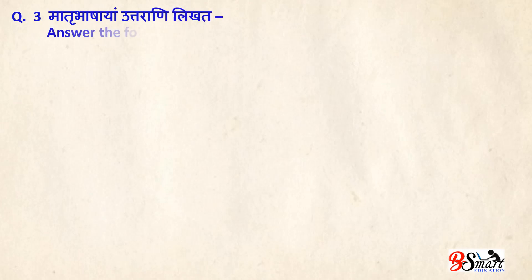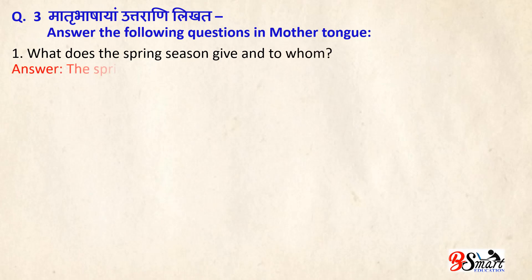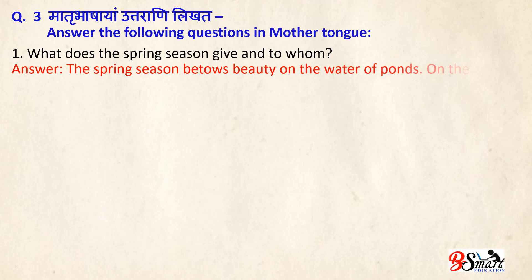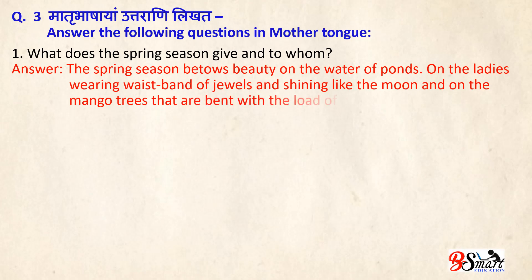Question No. 3: Answer the following questions in English. First: What does the spring season give and to whom? Answer: The spring season bestows beauty on the water of the ponds, on the ladies wearing wristbands of jewels and shining like the moon, and on the mango trees that are bent with the load of blossoms.